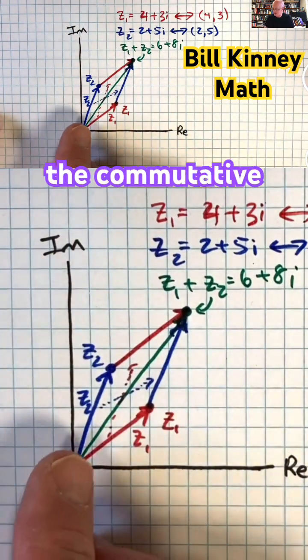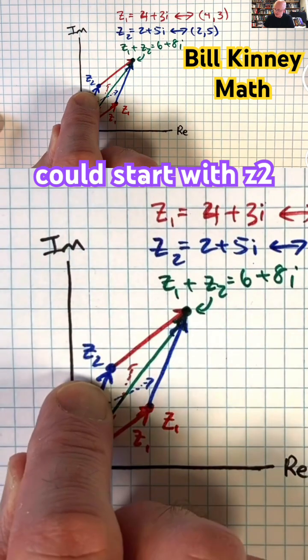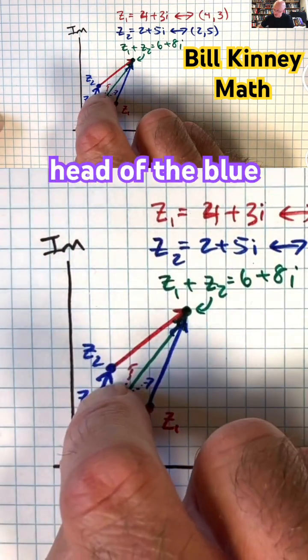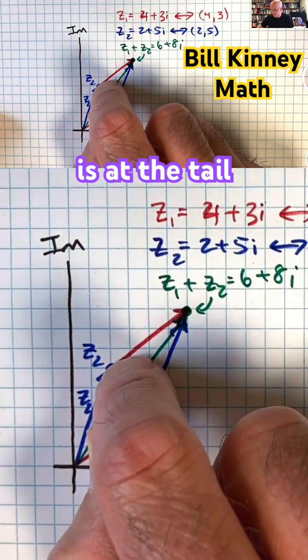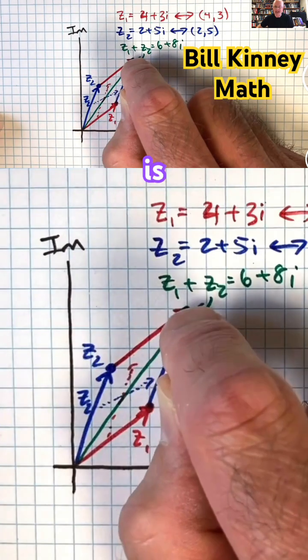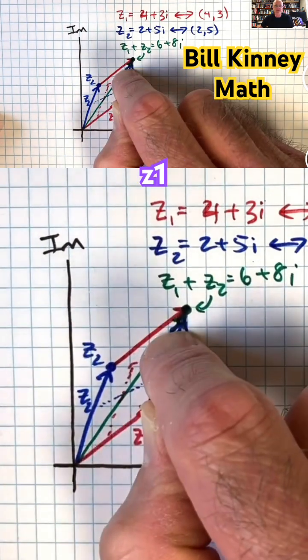Which really emphasizes the commutative property. I could start with Z2, translate Z1 up here so that the head of the blue arrow is at the tail of the red arrow, draw that red arrow, and once again, its head is at the head of the sum Z1 plus Z2.